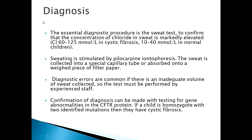Besides clinical parameters, the essential diagnostic procedure is the sweat test, which confirms that the concentration of chloride in sweat is markedly elevated — between 60 to 125 mmol/L in cystic fibrosis compared to 10 to 40 mmol/L in normal children. Sweating is stimulated by pilocarpine iontophoresis. A confirmational diagnosis can be made by testing for gene abnormalities in the CFTR protein; if a child is homozygous with two identified mutations, they have cystic fibrosis.